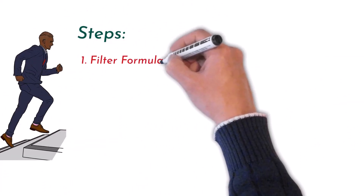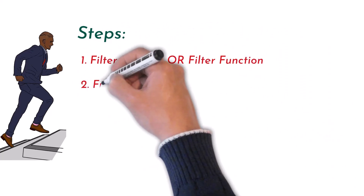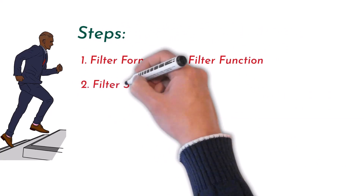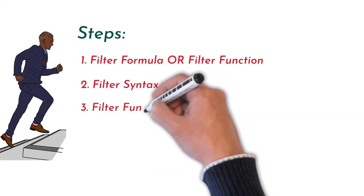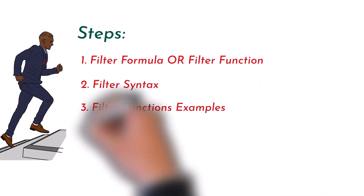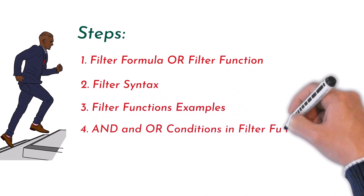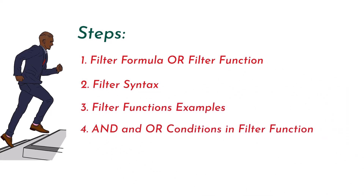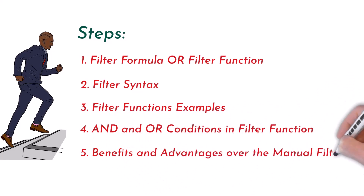First, what is the filter formula or function? Second, understand the syntax of the filter function. Third, a detailed explanation with examples. Fourth, how to use AND condition and OR condition in a filter. And fifth, what are the benefits of using the filter function, and how does it differ from manually filtering data?